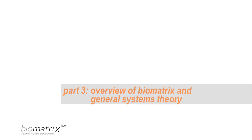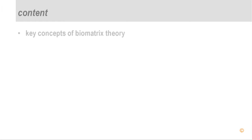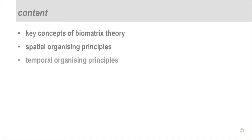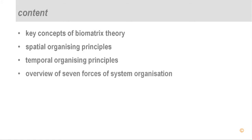Part three: overview of biometrics and general systems theory. Briefly, the content will be: first, the key concepts of biometrics theory; we are going to introduce the concept of the web of the biometrics, different types of systems and sub-webs, and different perspectives of the web — the field and the web perspective. Then we look at the spatial organizing principles, how the different types of systems of the biometrics are organized in space, then temporal organizing principles, how the systems develop over time, and then seven forces of systems organization — what are the seven forces that co-develop a system.